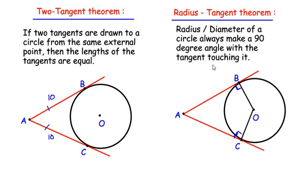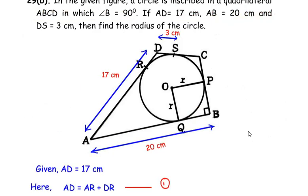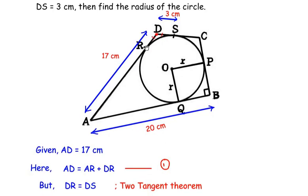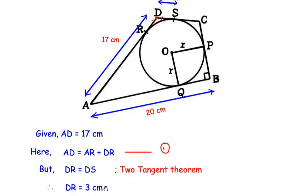Now let us apply these two theorems to our example. Considering point D as an external point, it makes two tangents to the circle: DR and DS. By the two tangent theorem, the length of DR equals the length of DS. Since DS is given as 3 cm, DR is also equal to 3 cm.